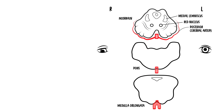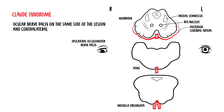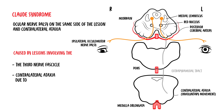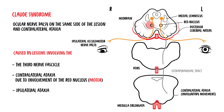The third midbrain syndrome is Claude syndrome, used to describe oculomotor nerve palsy on the same side as the lesion with contralateral ataxia. The contralateral ataxia is due to involvement of the red nucleus, which is motor. However, one can also get ipsilateral ataxia — on the same side — due to involvement of the superior cerebellar peduncle.